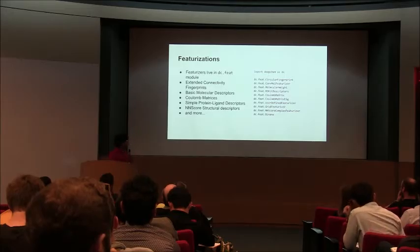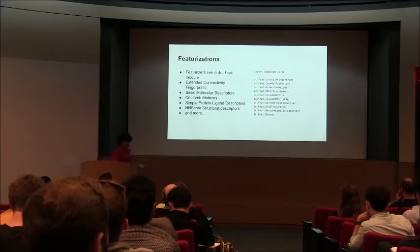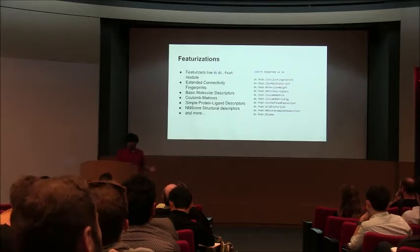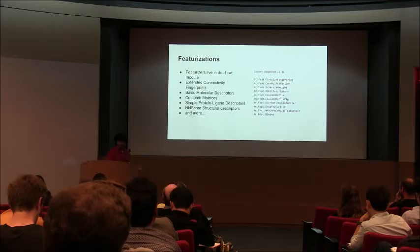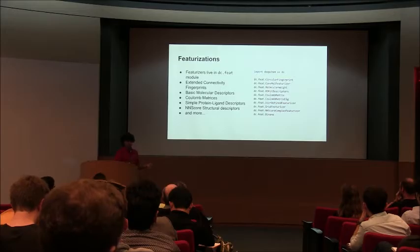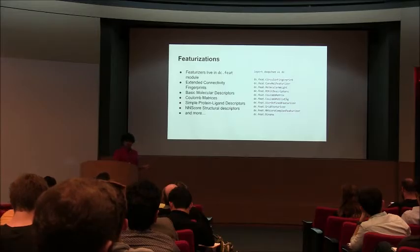We also provide a whole library of featurizers — something that takes in a molecule and transforms it into a mathematical representation. The circular fingerprint is one I talked about, but there are many others. There are very simple ones such as molecular weight and a couple of basic descriptors. There are more sophisticated ones like Coulomb matrices — a way of representing the charge structure of a compound, very useful for predicting quantum properties like HOMO-LUMO gaps.